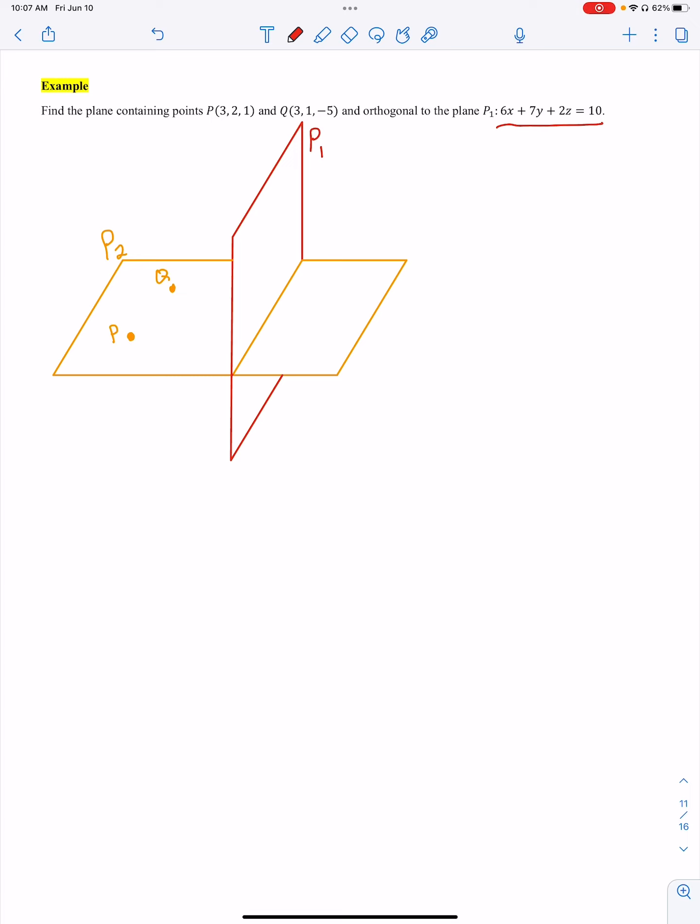So the normal vector for that, let's write this down, n1, call it that since it's plane 1. The normal vector, I pick up my coefficients, I got 6, 7, 2. That normal vector, how we want to think about that is let's think about it coming straight out of the plane, the red plane, right there on the plane 2, like in P2.